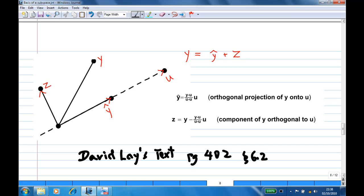And y-hat is called the orthogonal projection of y onto u, which is equal to y dot u over u dot u times u. And z is called the component of y orthogonal to u, which is y minus y-hat.